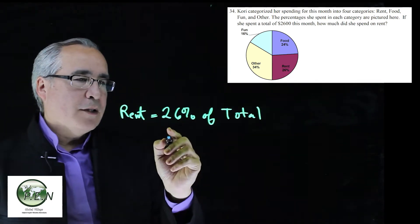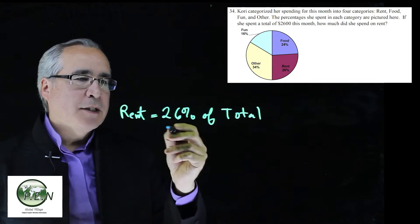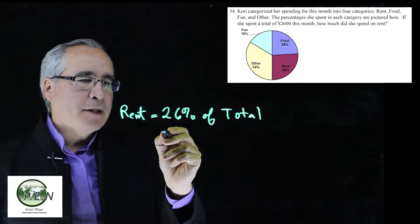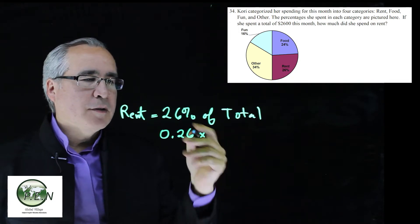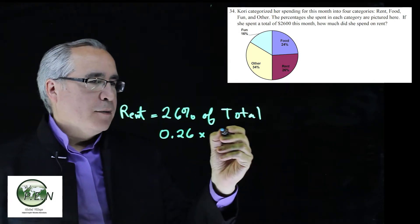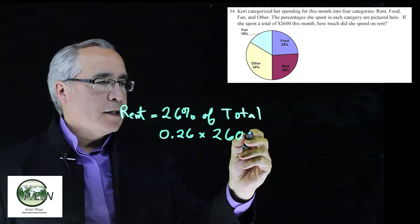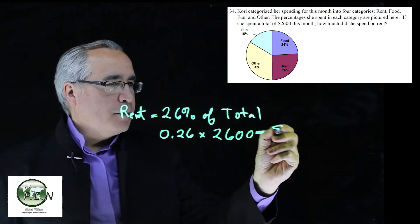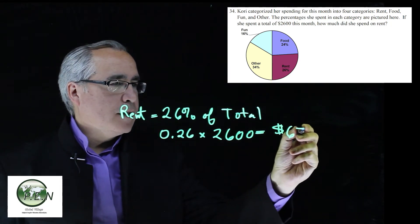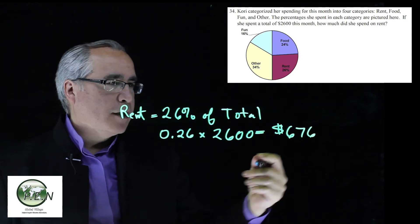So what we do is we take 26% as a decimal, converting back by dividing by 100. So we get 0.26. We multiply that by the total, which is $2,600, and we end up with $676 for rent.